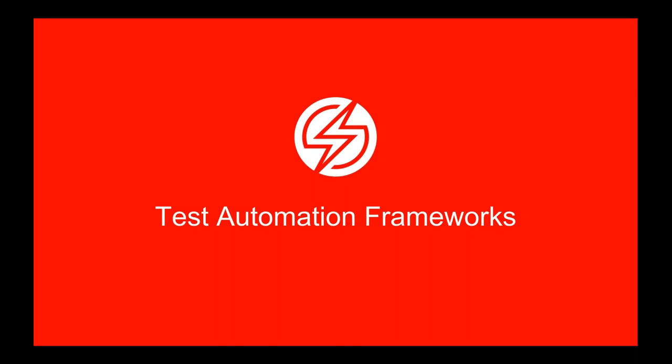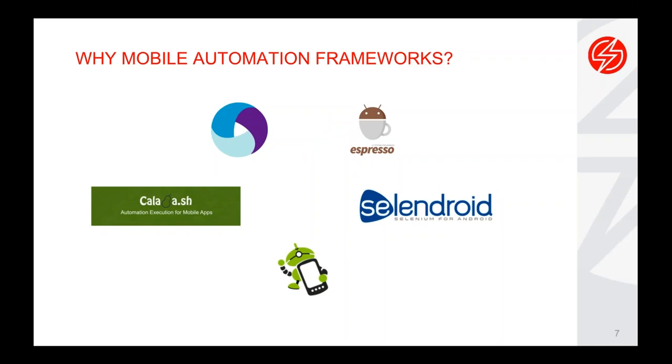The message from the poll results is that Appium is really the more dominant in the market. But we do see a gain in adoption when it comes to the native frameworks, which is Espresso on the Android side. And this leads me to the question: why do we need a mobile automation framework, and what mobile automation frameworks are there in the market?